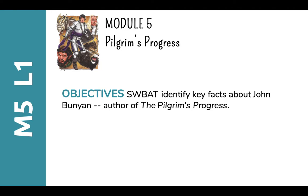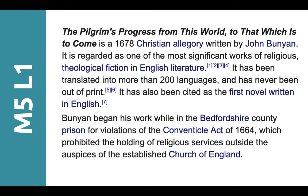Today's objectives are to identify key facts about John Bunyan, who is the author of Pilgrim's Progress. This is what our book looks like — our text. Here is Christian; he's the main character, and all these guys are characters in the book too. The Pilgrim's Progress from this world to that which is to come is the 1678 Christian allegory written by John Bunyan.